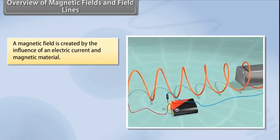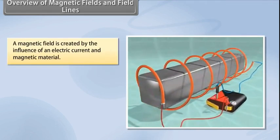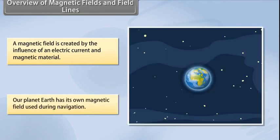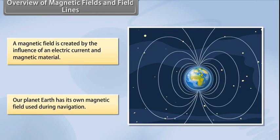A magnetic field is created by the magnetic influence of an electric current and magnetic material. Our planet Earth produces its own magnetic field, which is an important factor during navigation. Magnetic fields are also used in electric devices such as transformers.